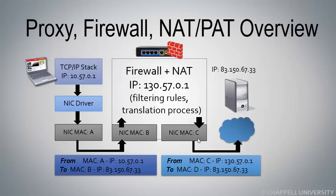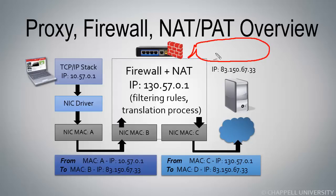It puts its own MAC address in as the source and the destination MAC address of the next router along the path. In order for this device to handle traffic coming back in response to this packet, it has to know the correlation between addresses. So it has to have in its tables something that indicates that traffic going outbound from 130.57.0.1 is actually, on the internal side, going to be forwarded back to 10.57.0.1.